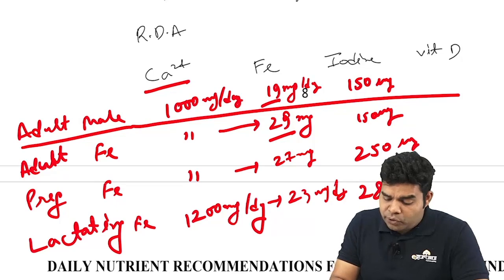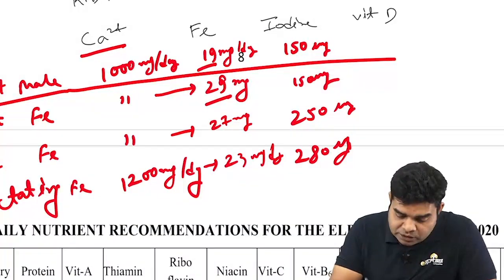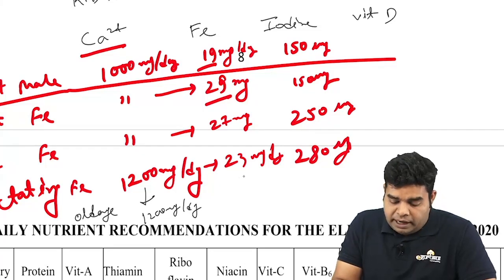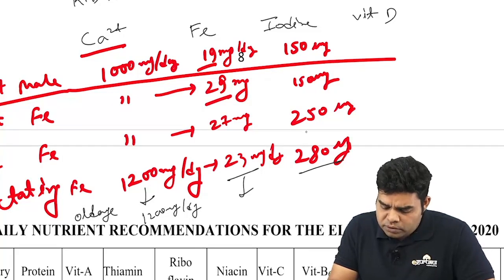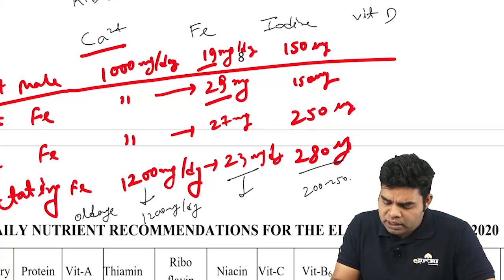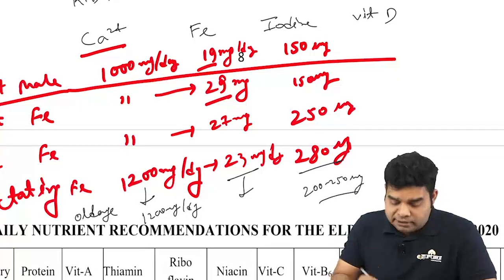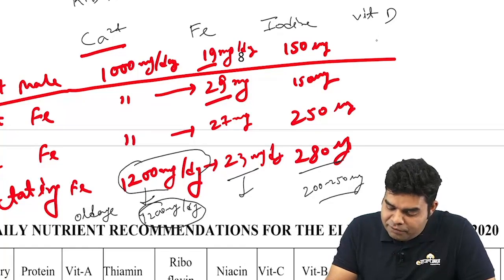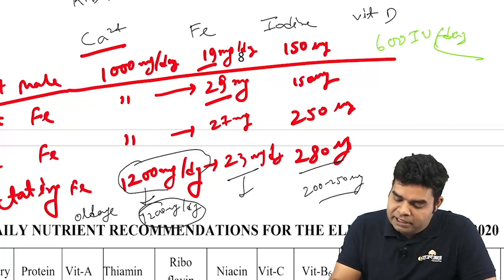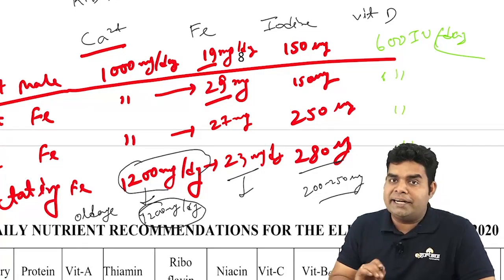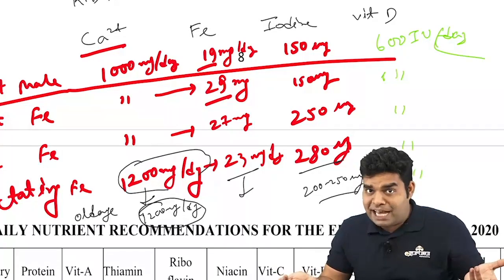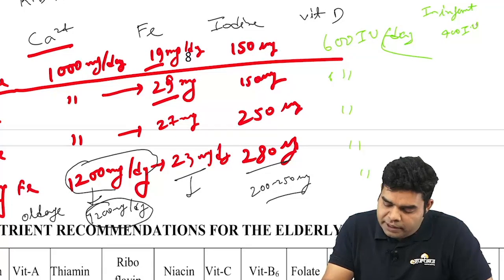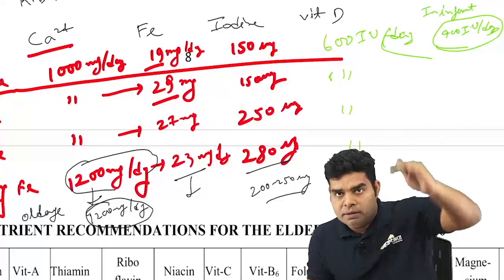For iodine: 150 micrograms/day for adult male and female; 250 micrograms/day for pregnant female; and 280 micrograms/day for lactating female. Old age calcium is the same as lactating — 1200 mg/day. For vitamin D, it is 600 IU per day across all adult groups including pregnant and lactating females; for infants under one year it is 400 IU per day.